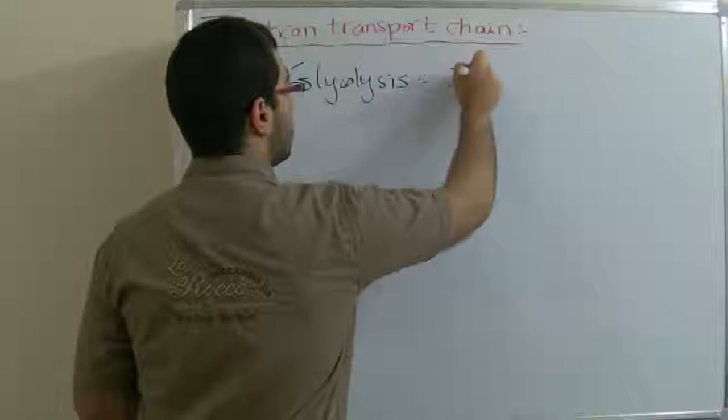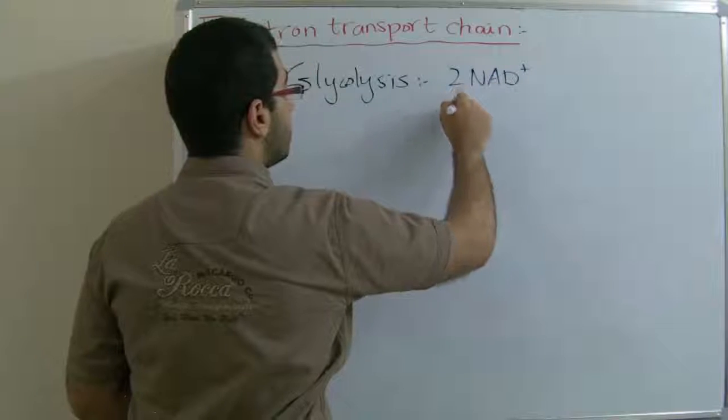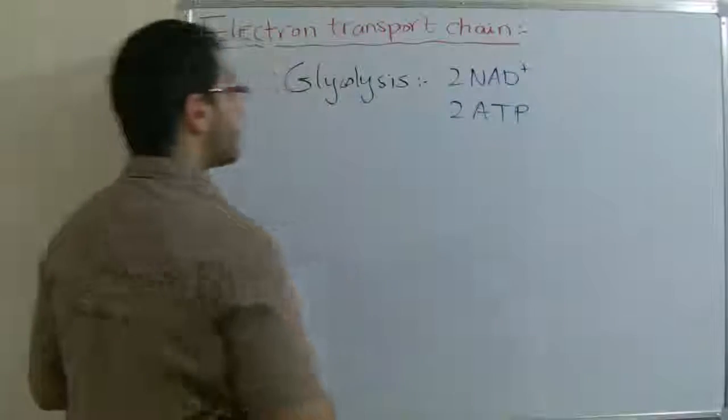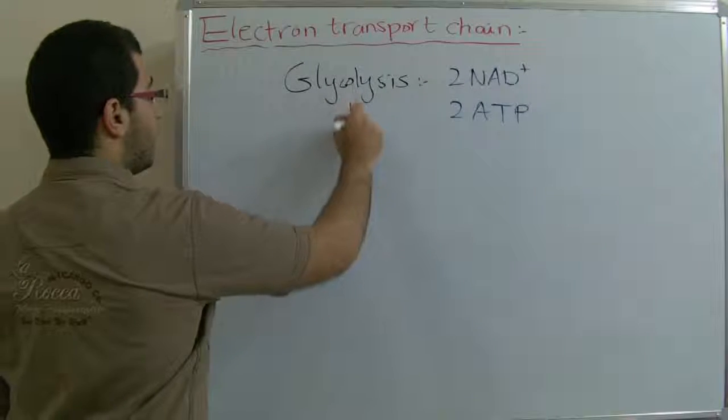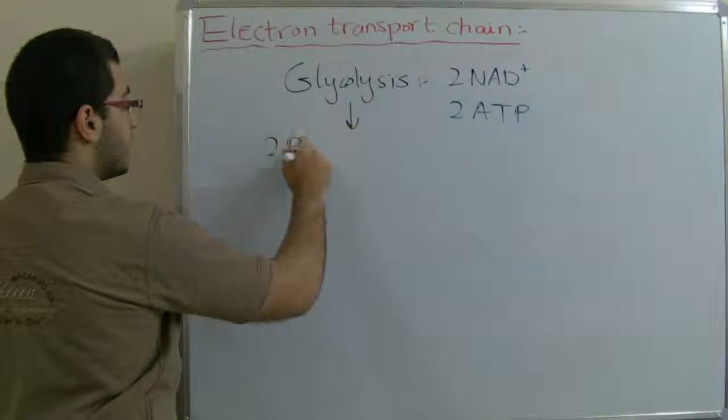In glycolysis, there are two NAD plus, two ATP. Then glycolysis converts the glucose into two pyruvic acid molecules.